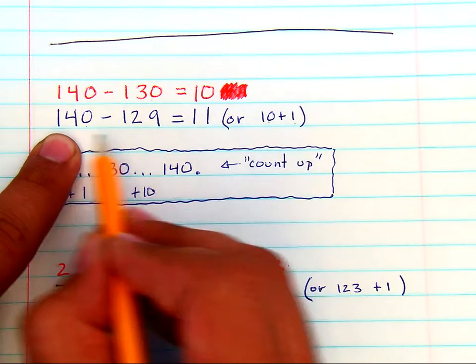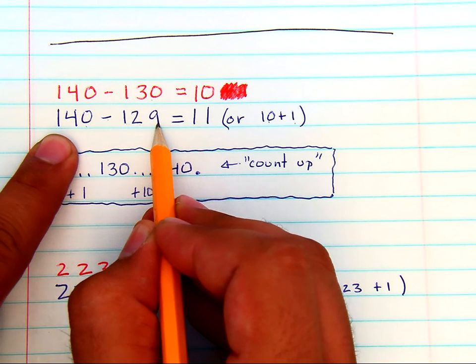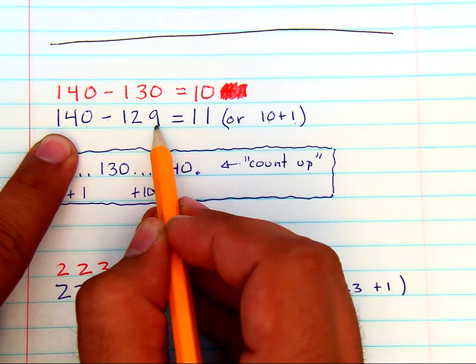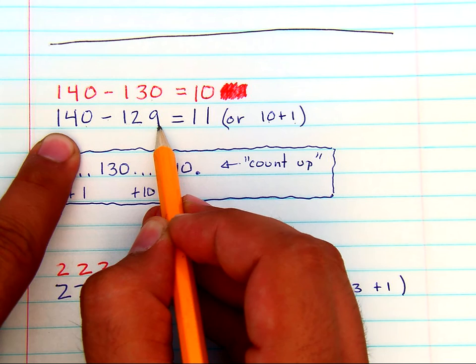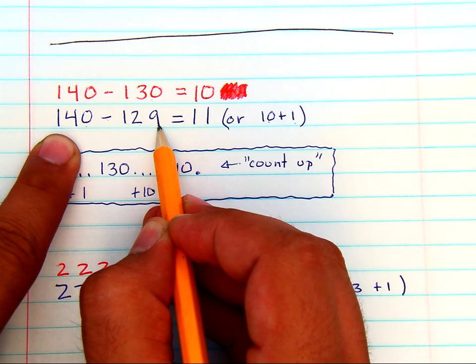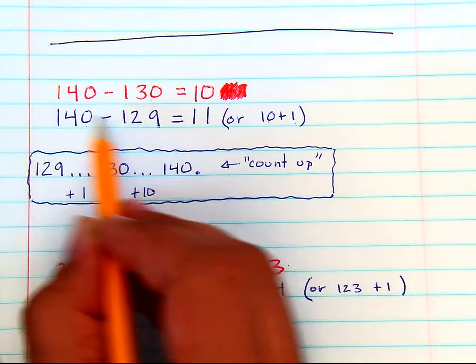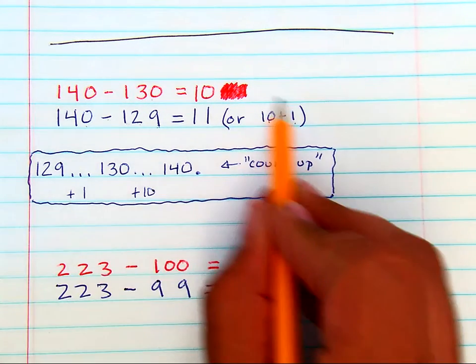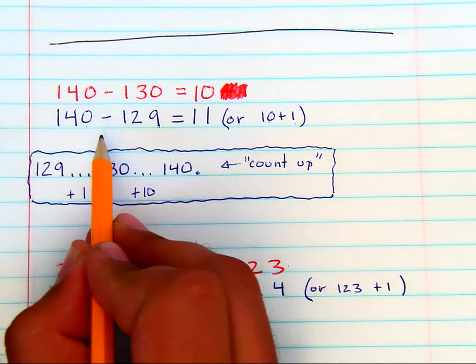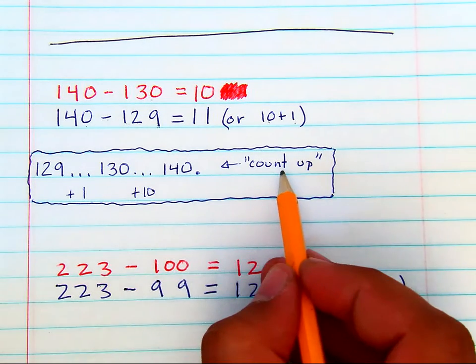So if you see 140 minus 129, and you see it as 140 minus 130 minus 1, then these numbers, these subtraction problems, can be solved mentally in your head.